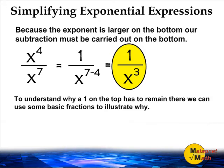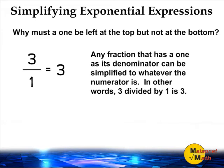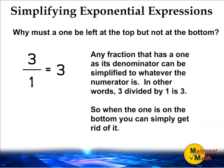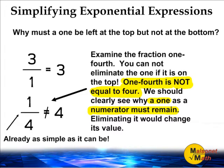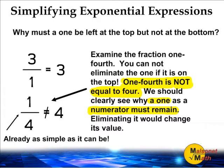To understand why a number one on the top has to remain there, we can use some basic fractions to illustrate why this is true. Any fraction that has a one as its denominator can be simplified to whatever the numerator is. In other words, three divided by one is the number three. So when the number one is on the bottom, you can simply get rid of it. Examine the fraction one-fourth — you may not eliminate the one if it is on the top. One-fourth is not equal to four. We should clearly see why a one as a numerator must remain; eliminating it would change its value.